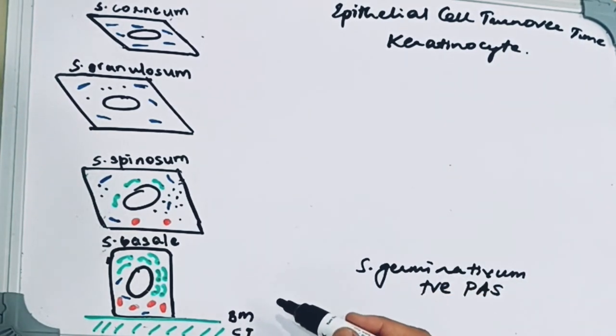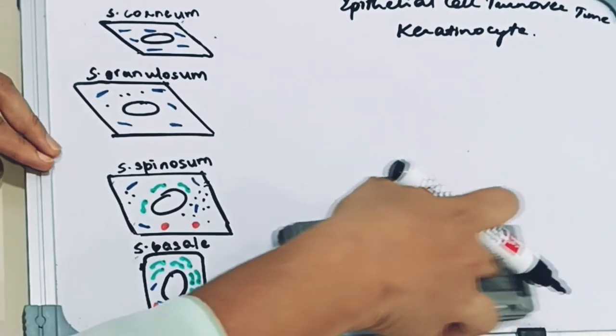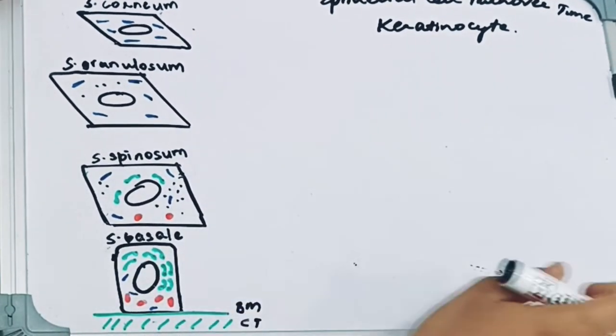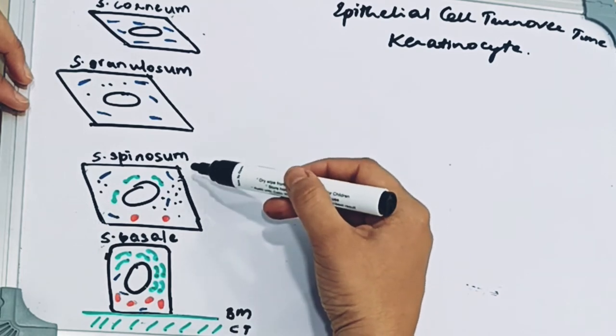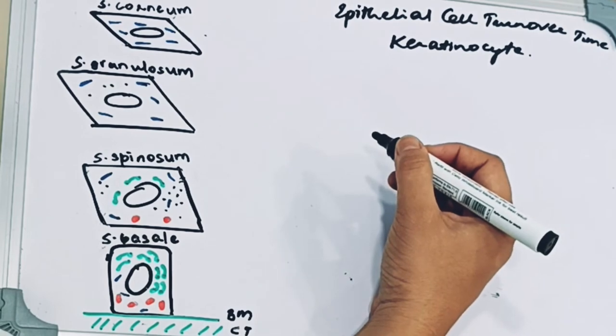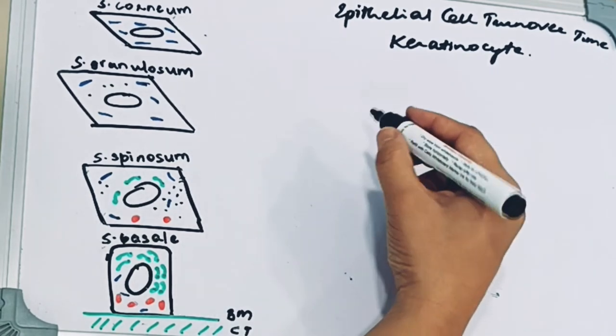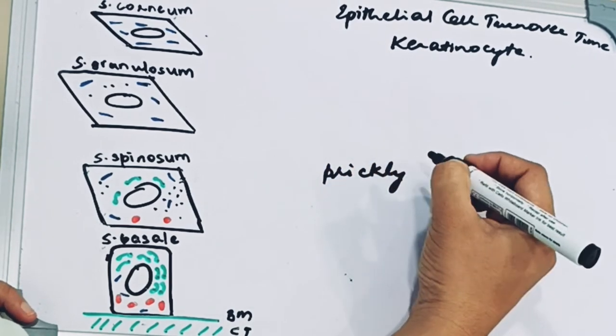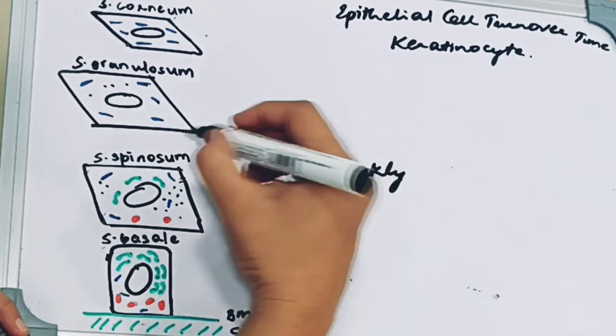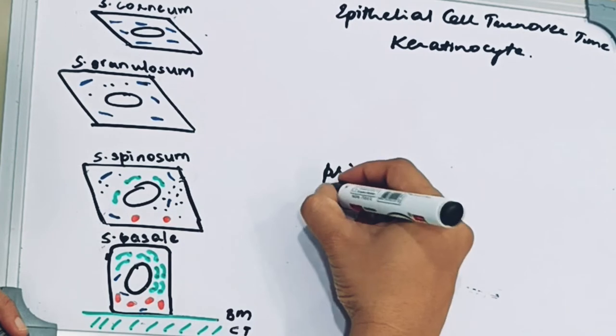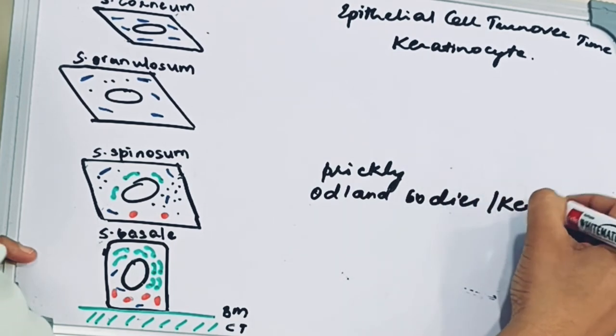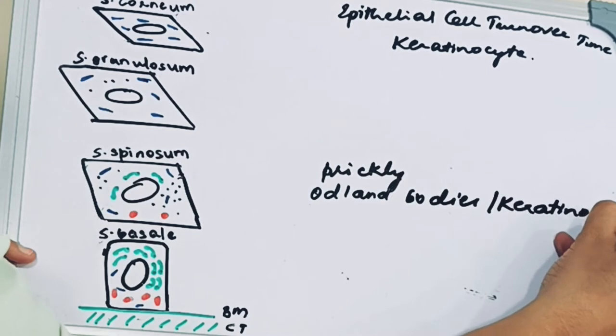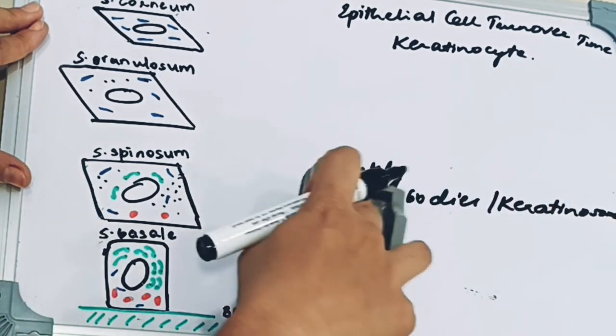Next we have the stratum spinosum. Compared to the basale, these cells are slightly flattened and have short cytoplasmic processes present like a spine. These spines occur at regular intervals, giving the cells a prickly appearance. These cells are attached by desmosomes and contain granules called Odland bodies or keratinosomes, which contain acid phosphatase involved in destruction of organelle membranes.